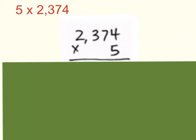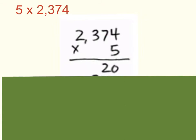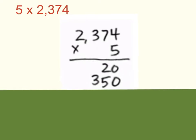Let's start out with our first problem of the day: 5 times 2,374. First we start in our ones column — 5 times 4 ones will give me a product of 20. Next we move to our tens place — 5 times 7 tens will give me a product of 350, or 35 tens.